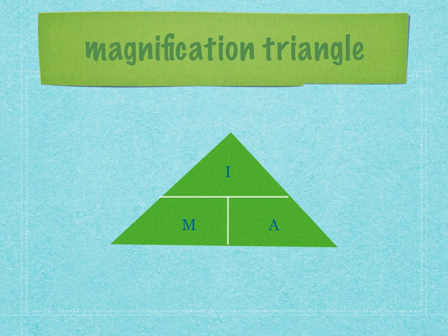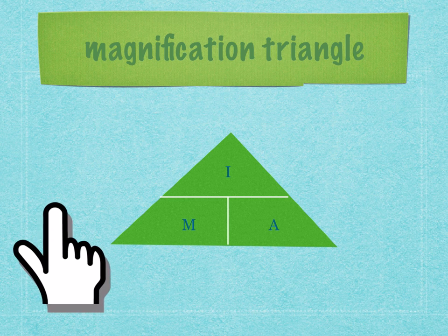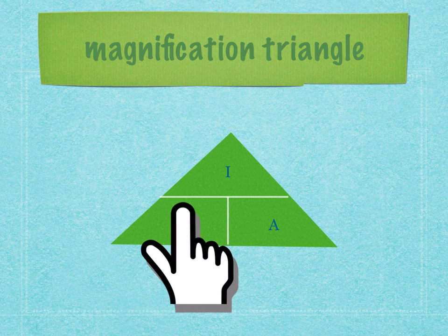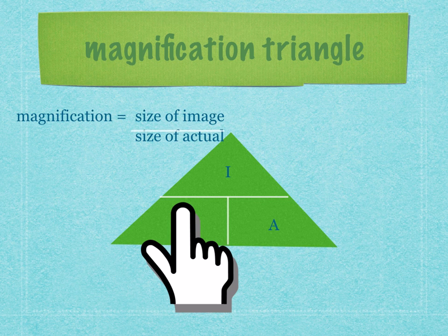If I want to calculate magnification, what is the equation? The first step is you put your hand over M. Once your hand is over M, you can see that M equals I divided by A. This means magnification equals size of image divided by size of actual.